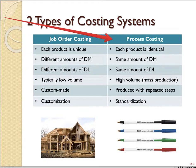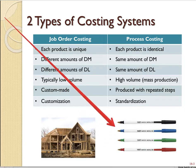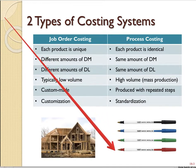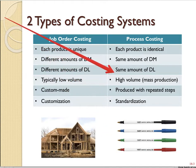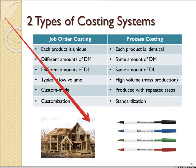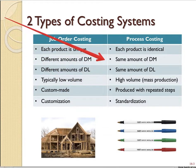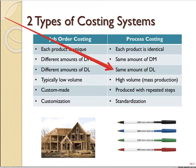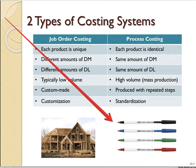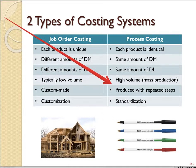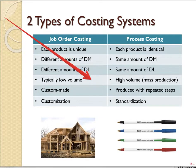Process costing is different. Under process costing each product is identical. Take these pens — they look exactly the same, different colors aside. As opposed to a custom house where every one looks different, these all essentially look the same. Each product has the same amount of direct materials and requires the same amount of direct labor because the inputs are identical.